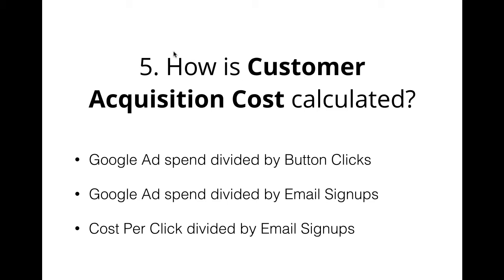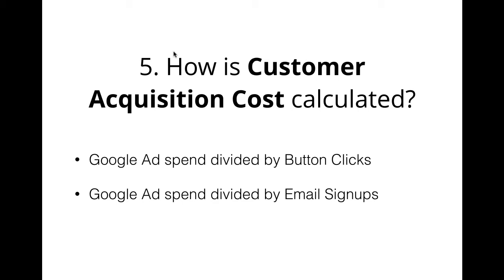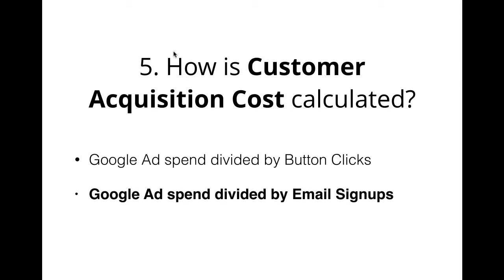Cost per click could be a number between a dollar to a few dollars, whereas Google ad spend is going to be the total budget, probably $50 to $150. So we know right away that dividing a few dollars by the total number of email signups is not going to be the right answer. We want to take the total budget and divide it by the number of customers acquired. The only right answer here is email signups, because button clicks aren't really an acquisition — you want their email addresses.